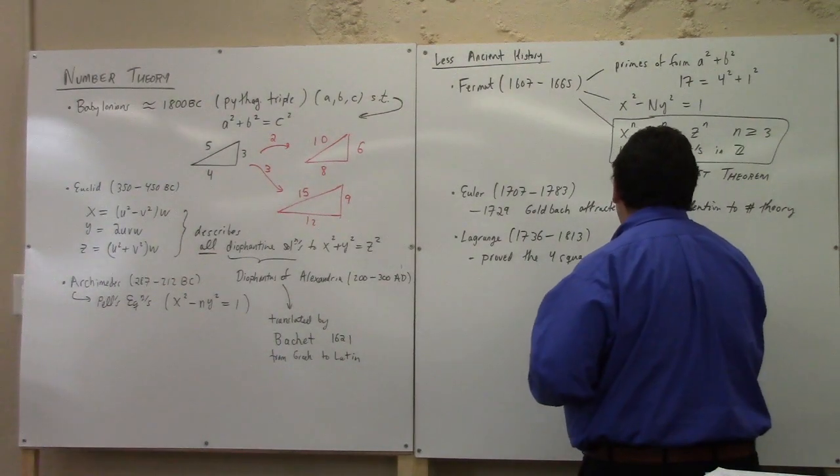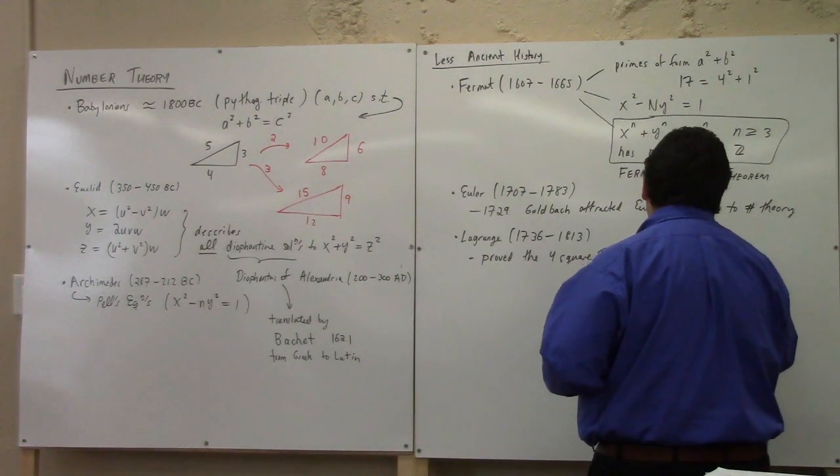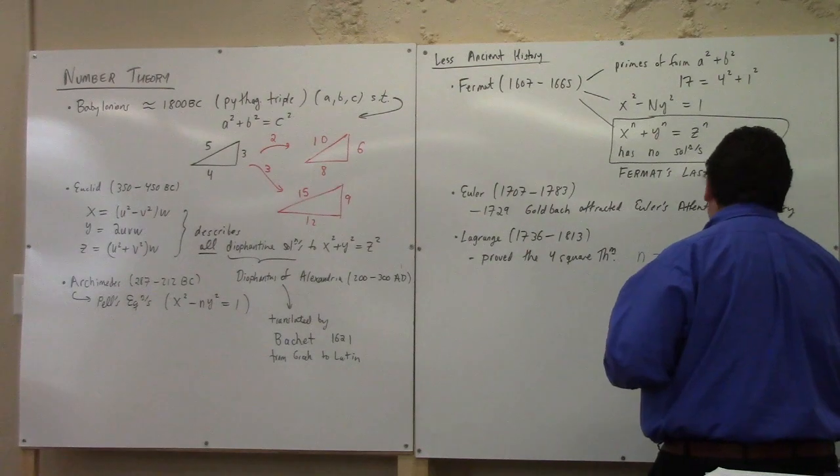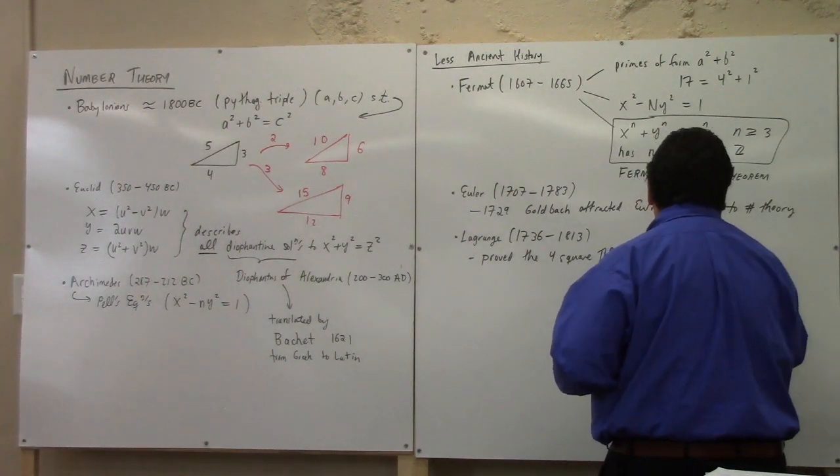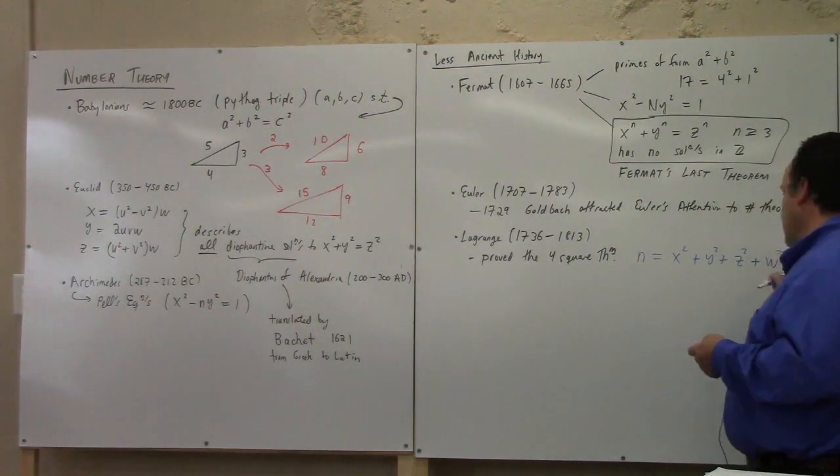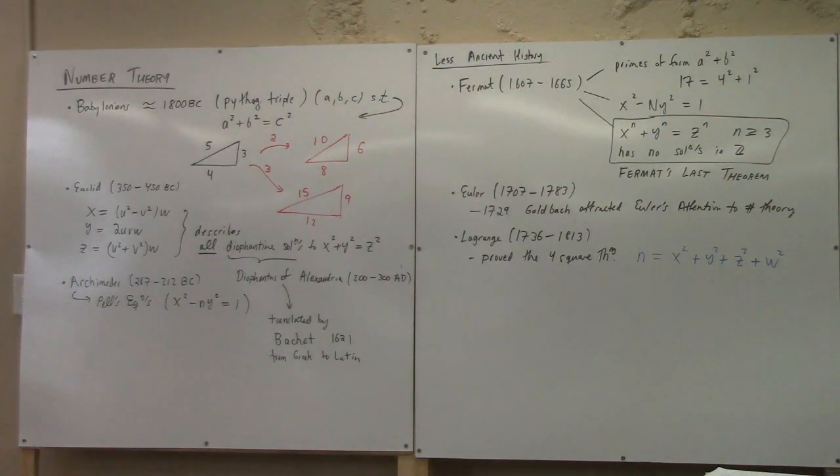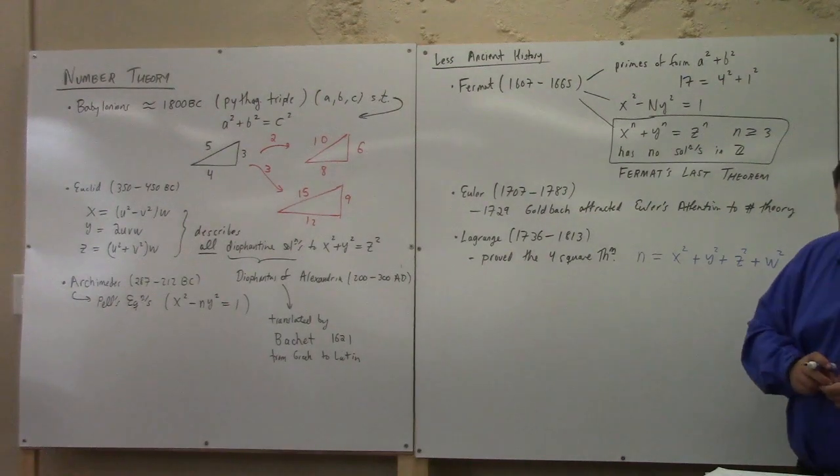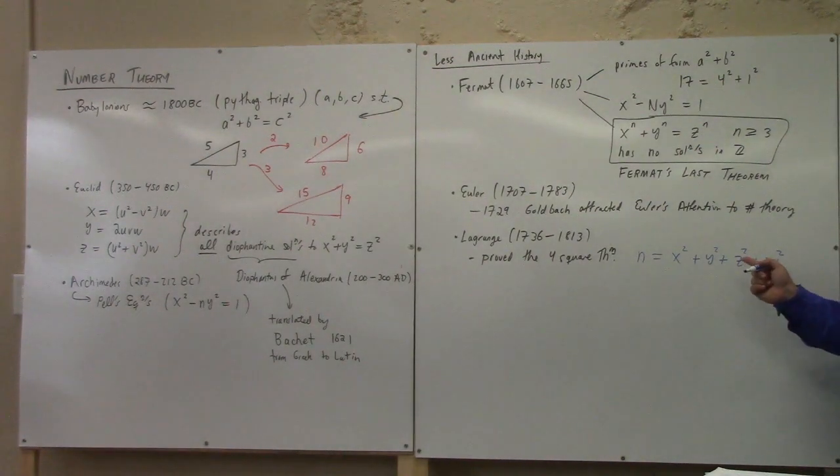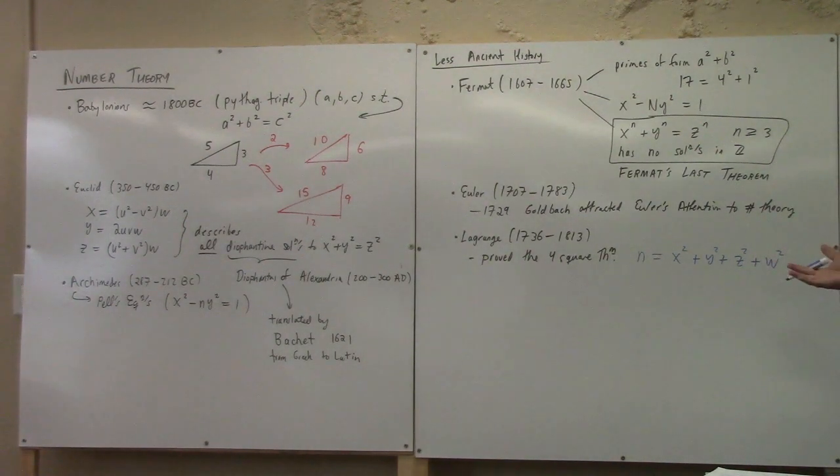So if you give me N, you can find X, Y, Z, and W such that N is equal to the sum of the squares of these guys. This is the four-square theorem. If we do prove that this semester, what we'll see is to actually prove that, we study quaternions a little bit. And quaternions allow us to derive something called the four-square identity, which then allows you to prove this.